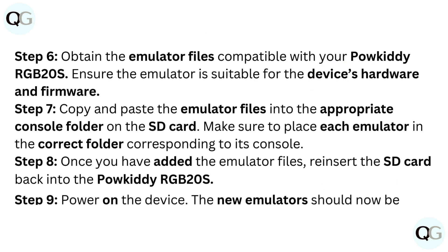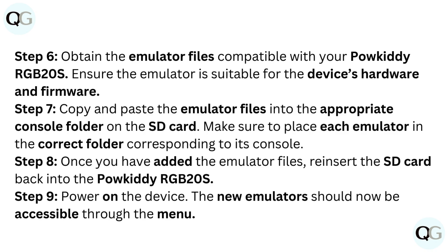Step 6: Obtain the emulator files compatible with your PowKiddy RGB20S. Ensure the emulator is suitable for the device's hardware and firmware. Step 7: Copy and paste the emulator files into the appropriate console folder on the SD card. Make sure to place each emulator in the correct folder corresponding to its console.